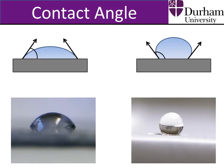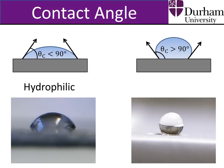If the contact angle of a water droplet on a surface is less than 90 degrees, the surface is known as hydrophilic. If the contact angle of a water droplet is greater than 90 degrees, the surface is known as hydrophobic.